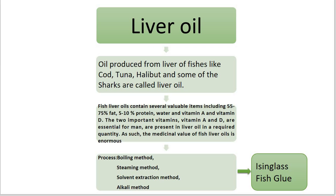Regarding composition, fish liver oils contain several valuable items including 55–75% fat, 5–10% protein, water, and vitamins A and D. Vitamins A and D are essential for man and are present in liver oil in required quantities. As such, the medicinal value of fish liver oil is enormous.